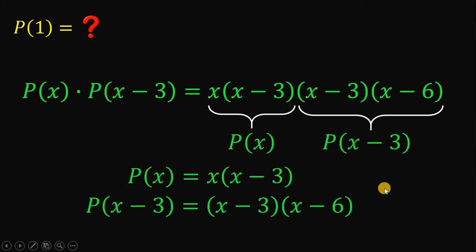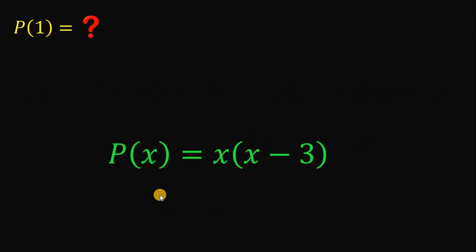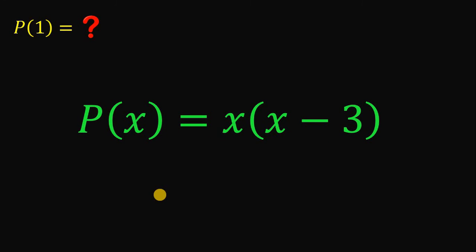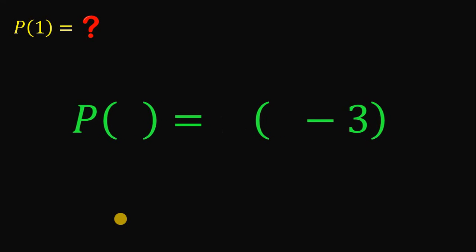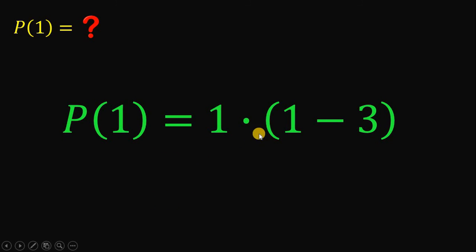Therefore, we are now sure that P(x) is x times x minus 3, and we can now easily find the value of P(1). What we're going to do is replace all x with 1. So we have P(1) equals 1 multiplied by 1 minus 3.